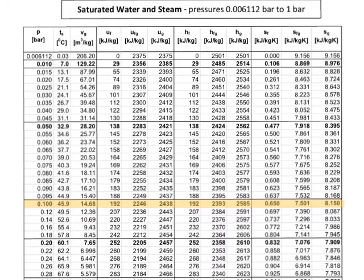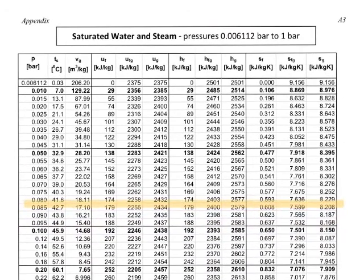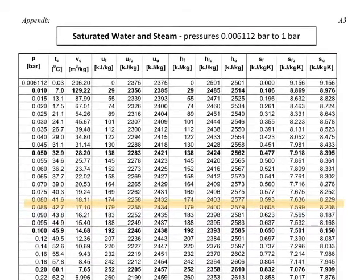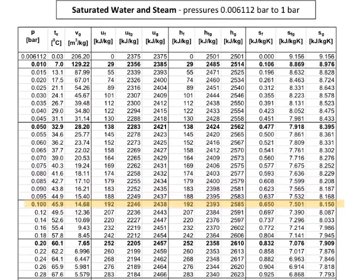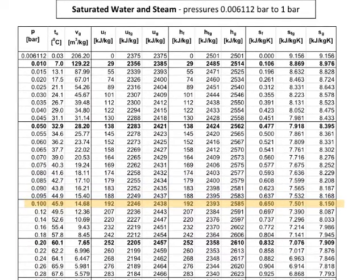We are now at the steam tables. Relevant page will be page A3, and if you look, I have highlighted the 0.1 bar, and if you look at 0.1 bar, you can see, to qualify to be saturated steam, the entropy needs to be 8.15.